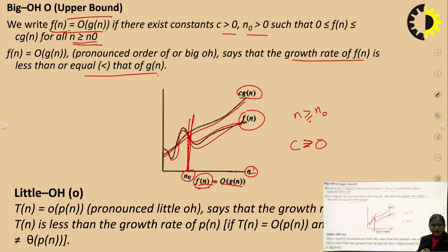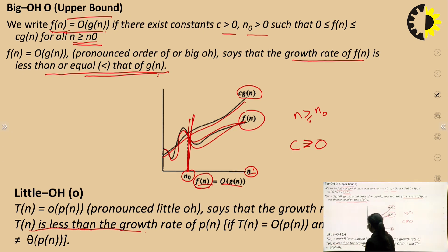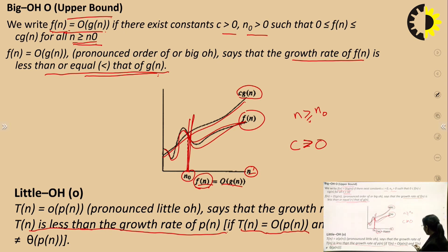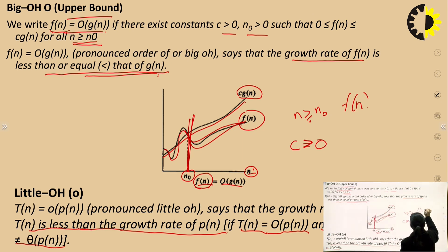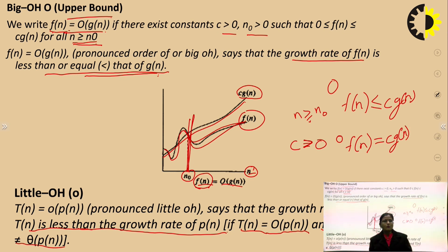Little o is basically the same as Big O but the difference is that in Big O, f(n) is less than or equal to c·g(n), whereas in Little o, f(n) is strictly less than c·g(n) — meaning f(n) is exactly equal to O(g(n)) but not equal to Theta(g(n)). That is the basic difference between Big O and Little o.